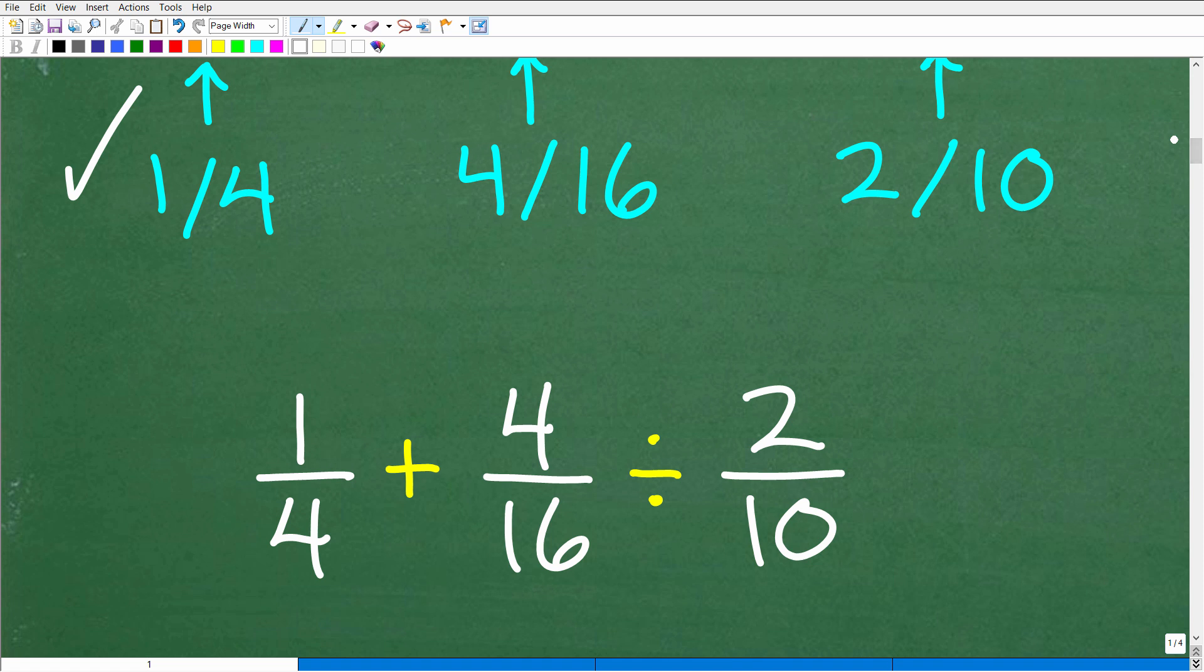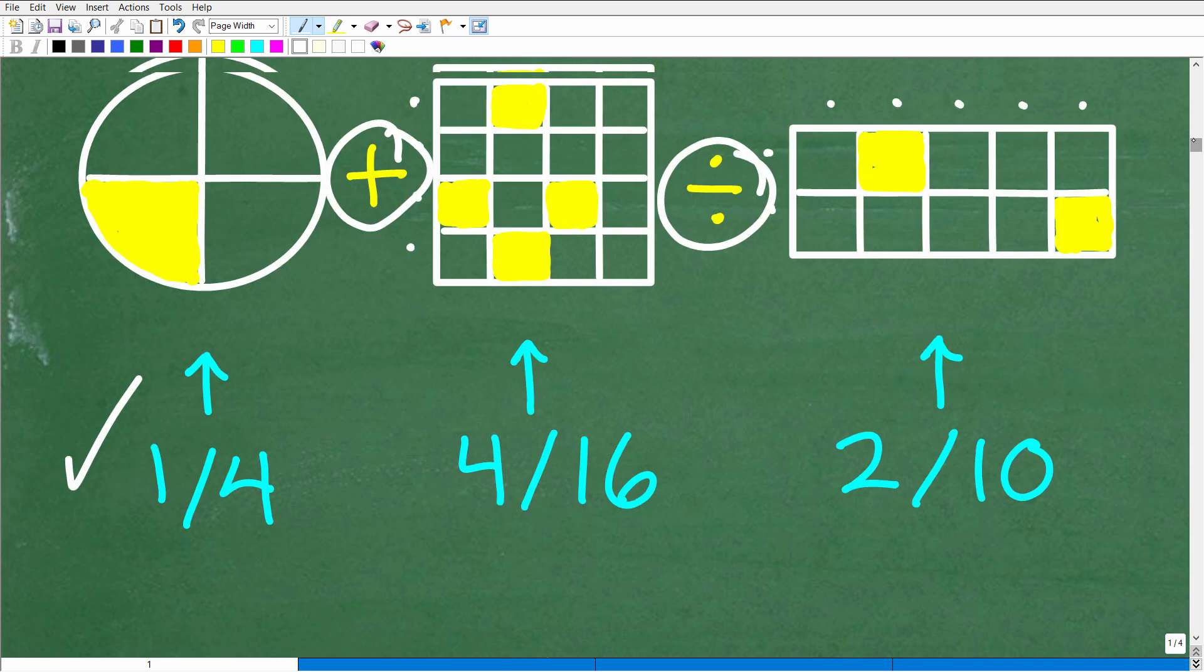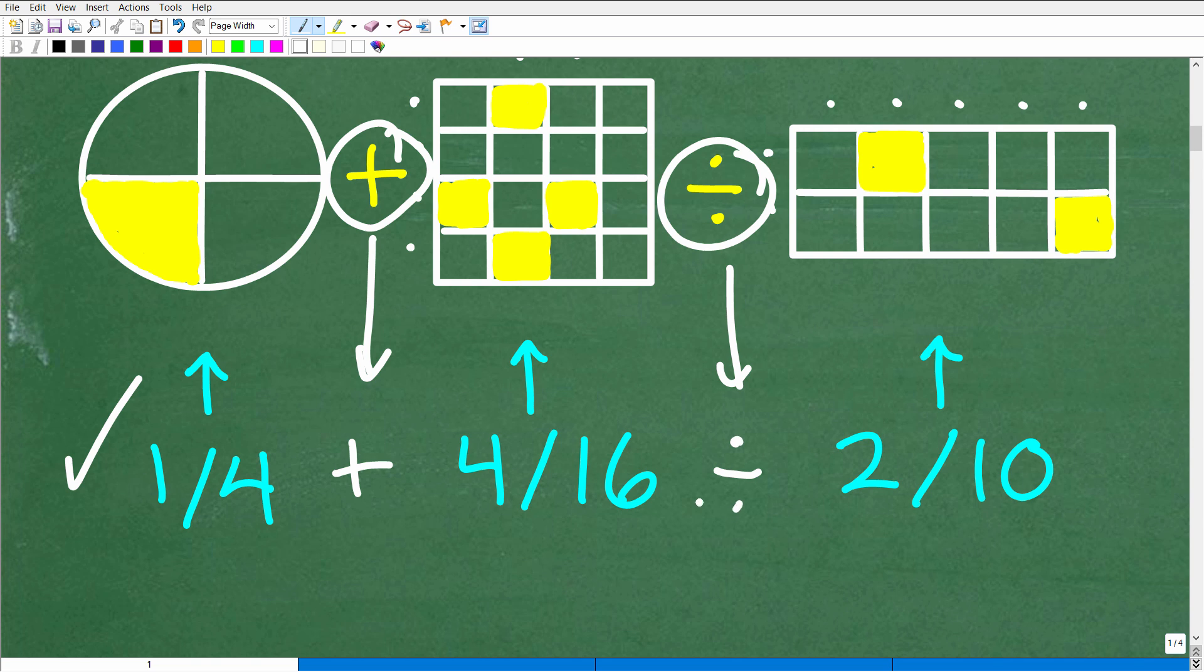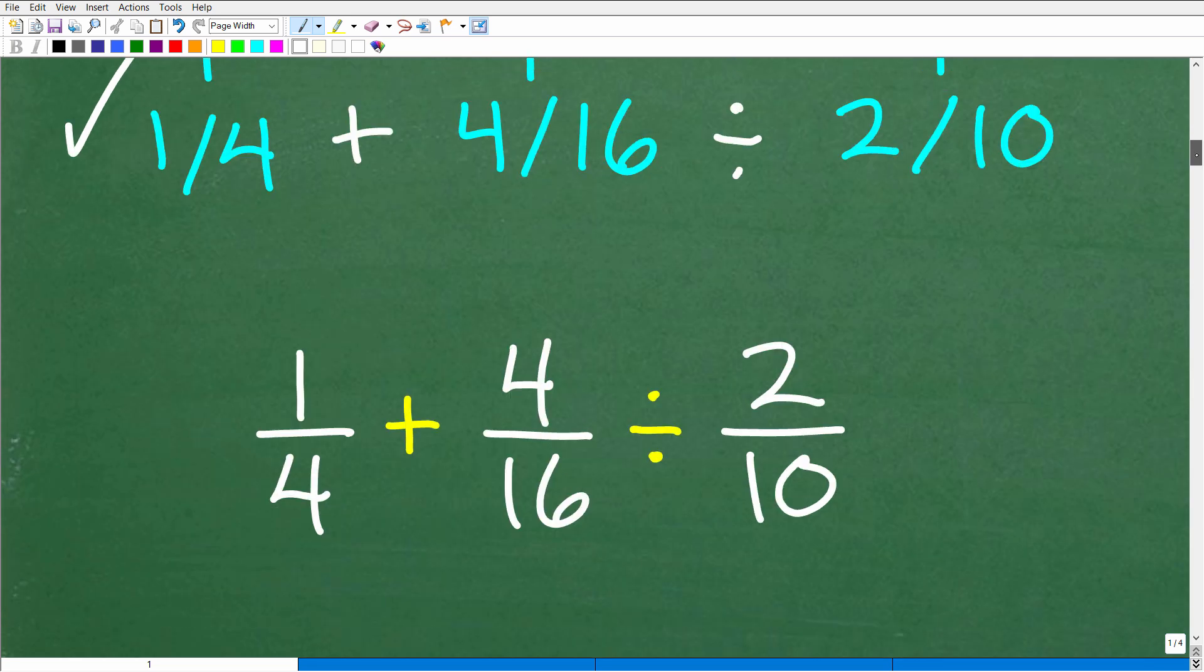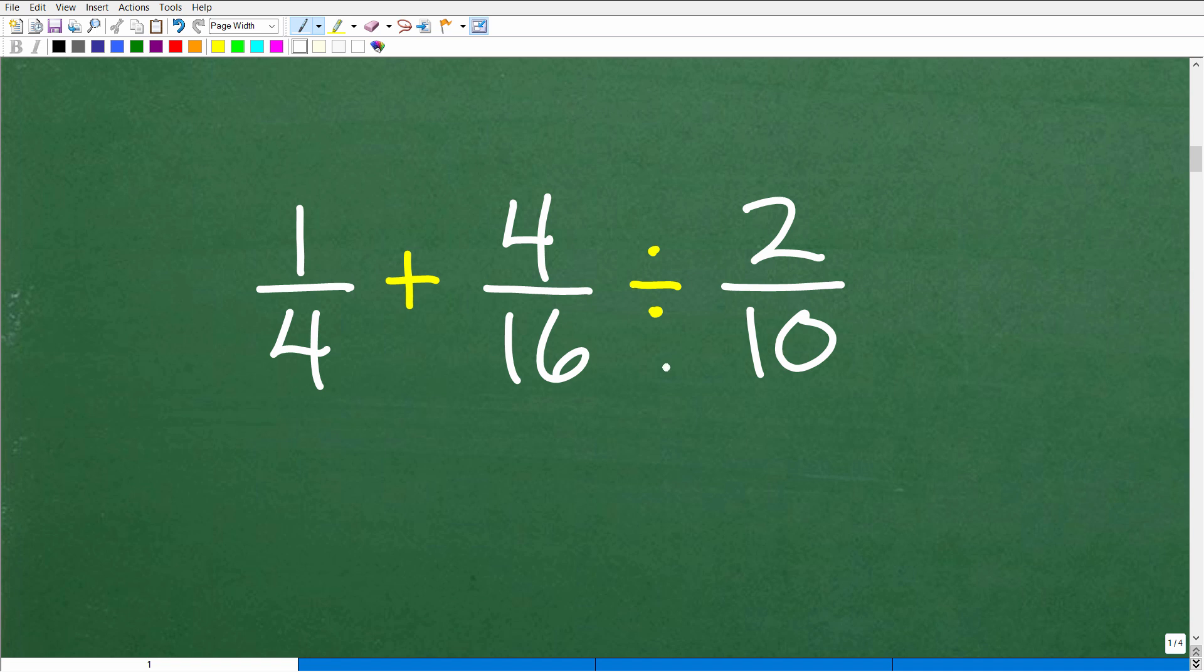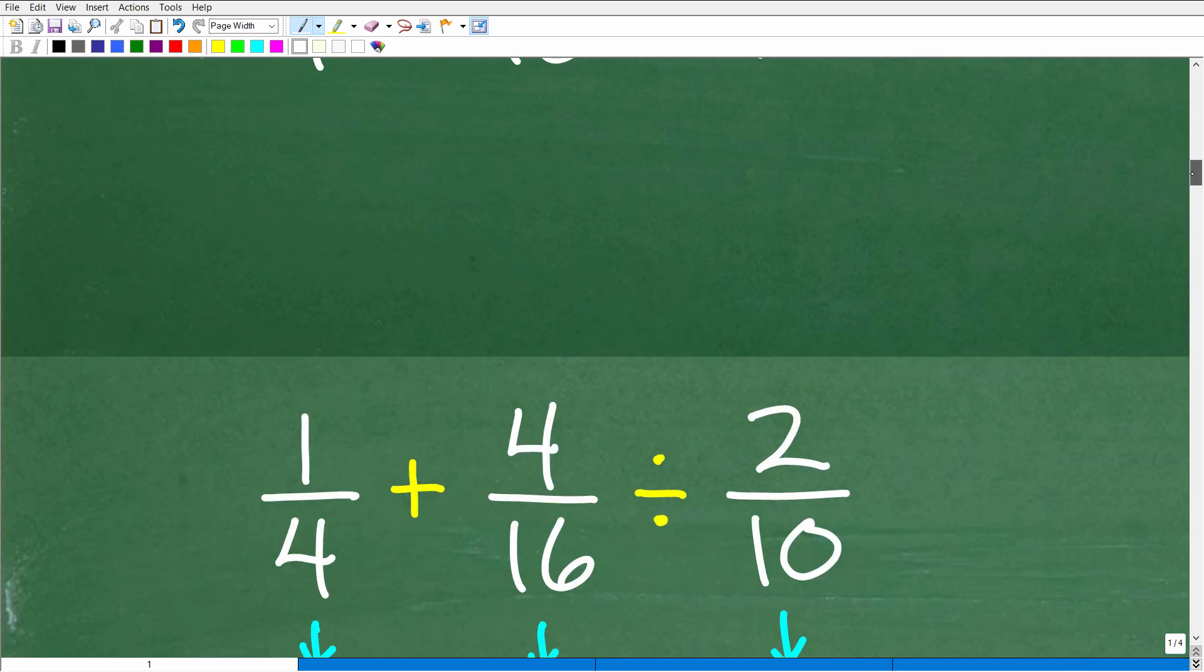So, here, the actual problem is going to be one-fourth plus four-sixteenths divided by two-tenths, right? So, here, we have the operation, the addition operation, and here is the division. So, effectively, this is the problem. One-fourth plus four-sixteenths divided by two-tenths. Now, when you look at a fraction problem or any problem in mathematics, before you start doing anything, you want to get the problem in its simplest format, all right? So, is this current problem in its simplest format? Well, no, okay? Don't even start anything until you simplify each one of these fractions.